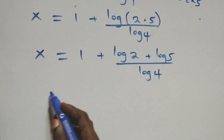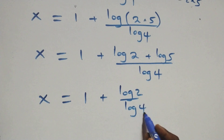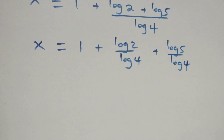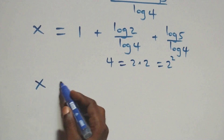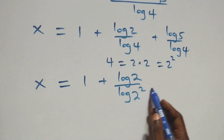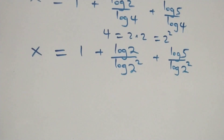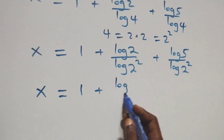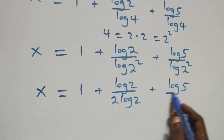Then we have x equals to one plus log two plus log five over log four. We can express four as two times two, which is two squared. Applying the power rule of logarithms, log two squared becomes two log two. So x equals to one plus log two over two log two, plus log five over two log two.